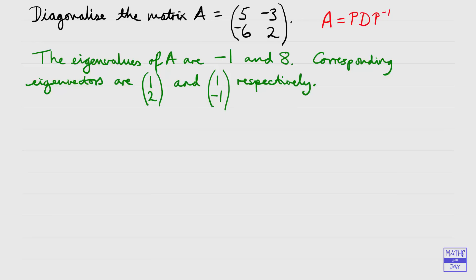It's very easy to write down the diagonal matrix. All we need to do — it's diagonal — so the entries not on the main diagonal are going to be zero, and the other entries are simply going to be the eigenvalues. I'm going to choose to write them in this order; it doesn't matter which we write where, but having written it in that order, it's then really important how we write down the matrix P.